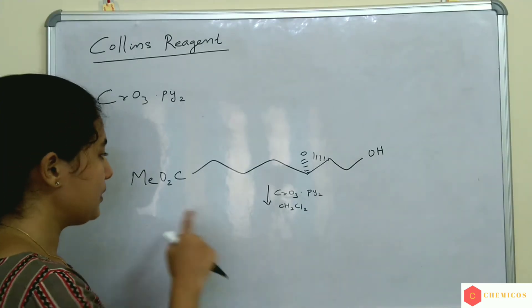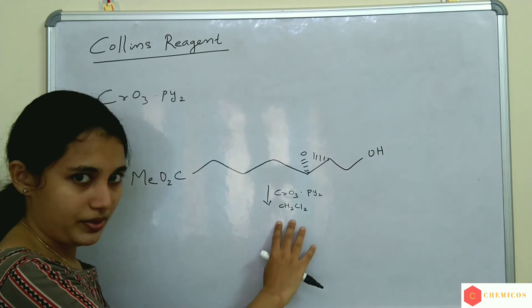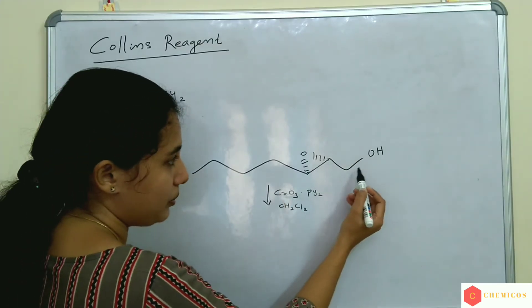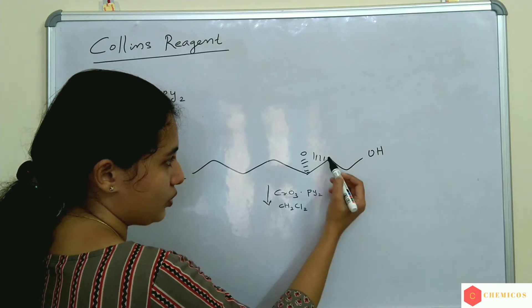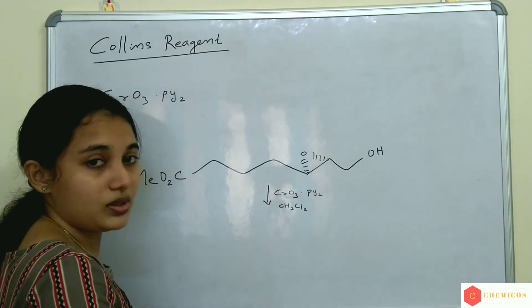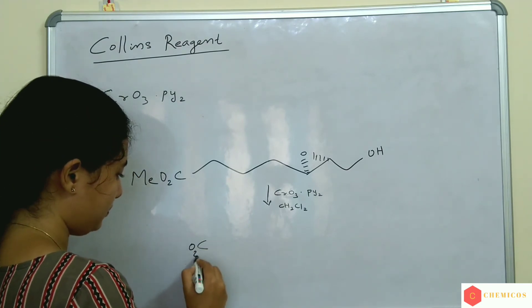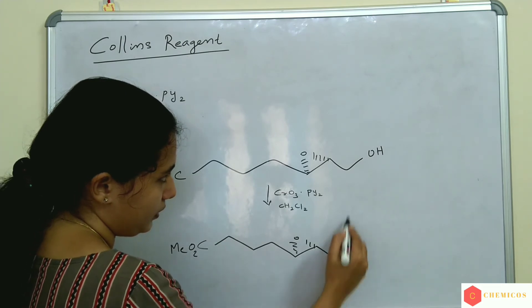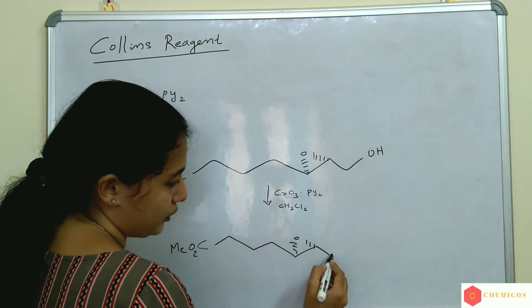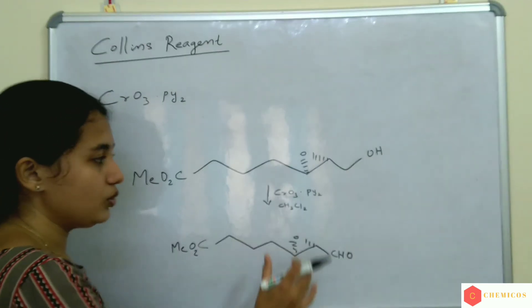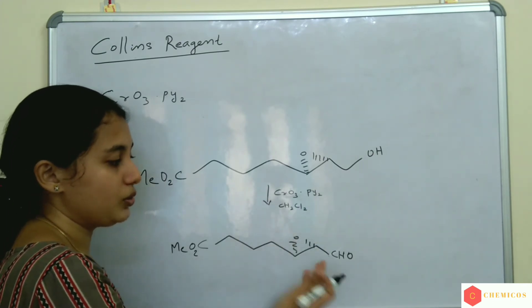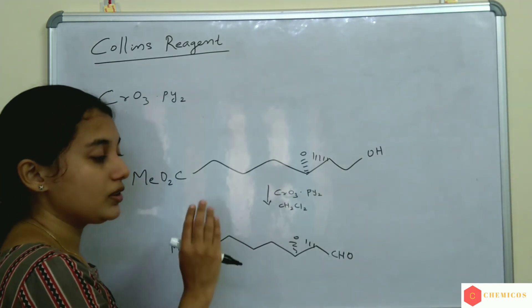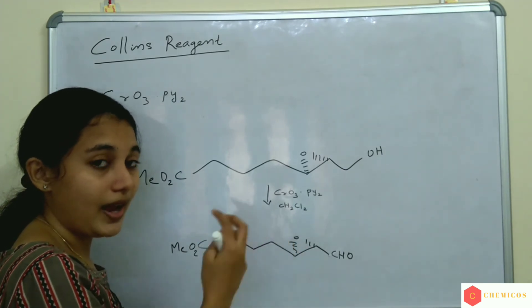This is an acid sensitive group, and it is unaffected in this reaction when we use Collins' Reagent. This is a primary alcohol and it is converted to an aldehyde. This carbon is attached to only one carbon, so this is a primary alcohol. Primary alcohol is converted to an aldehyde, and this OH is converted to an aldehyde when we use Collins' Reagent. Primary alcohol is converted to an aldehyde and a secondary alcohol is converted to a ketone. The advantage of Collins' Reagent is we can use this oxidizing agent on compounds containing acid sensitive groups also.